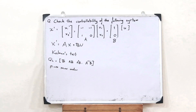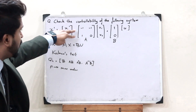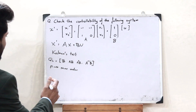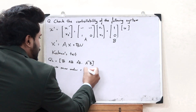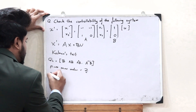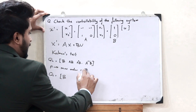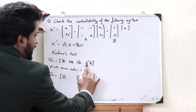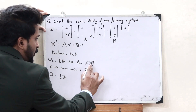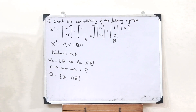When we observe matrix A and B, the maximum order value is equal to 2. So the value of n is equal to 2. Therefore, the matrix QC becomes equal to [B, A^(2-1)·B], that is [B, A¹·B], that is [B, AB]. So this is the required matrix that we need.